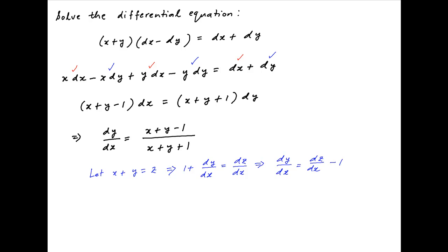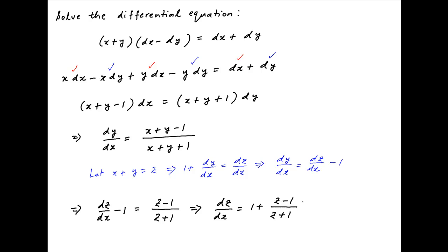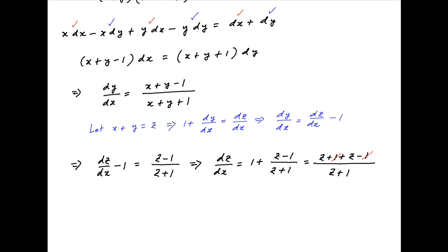Using this result, the given differential equation can be written as dz/dx minus 1 is equal to (z - 1)/(z + 1), and therefore dz/dx is equal to 1 plus (z - 1)/(z + 1), which equals (z + 1 + z - 1)/(z + 1), and this simplifies to 2z/(z + 1).